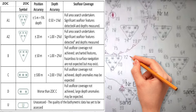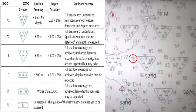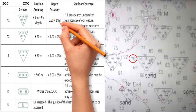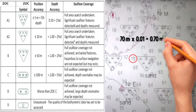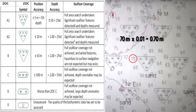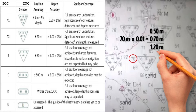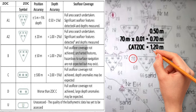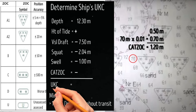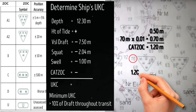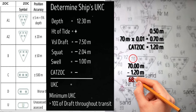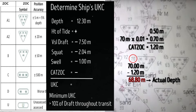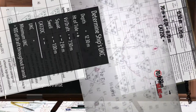Let us find the accuracy for a 70 meters depth sounding in category A1. First, 1% of 70 meters: 70 × 0.01 = 0.70 meter. Then add 0.50 + 0.70 = 1.20 meters accuracy — this is the zone of confidence margin, which is subtracted from the depth to find the UKC. If we subtract 1.20 meters from 70 meters, we assume the actual depth is 68.8 meters, not 70 meters, following the zone of confidence margin.